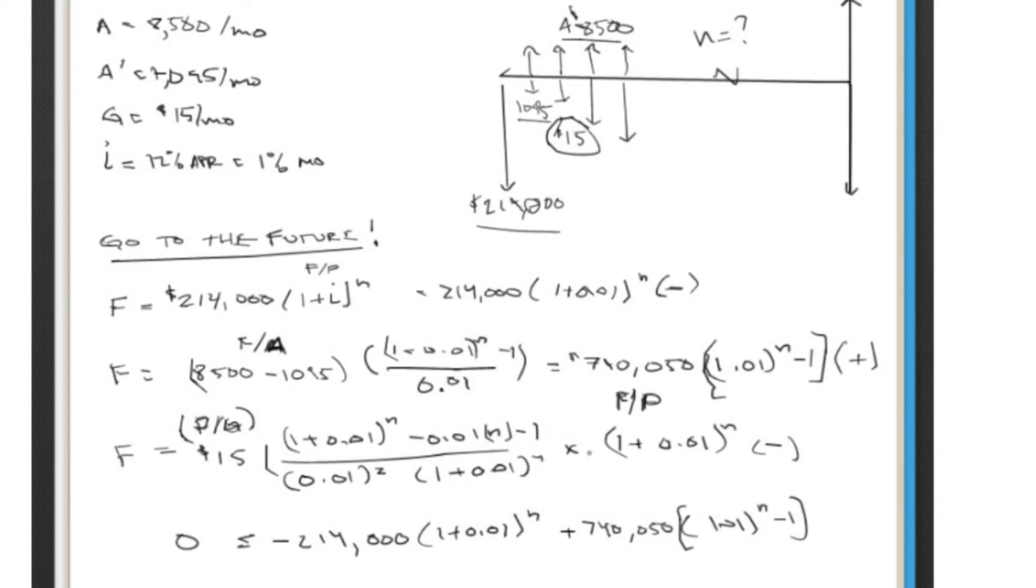Or 0 equals negative 214,000(1.01)^n plus 7,405(1.01^n - 1) minus 15 times [(1.01^n - 0.01n - 1) / 0.01^2] times 1.01^n. There's an n over there, believe me.